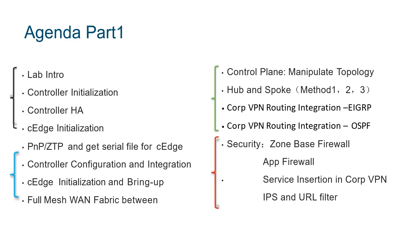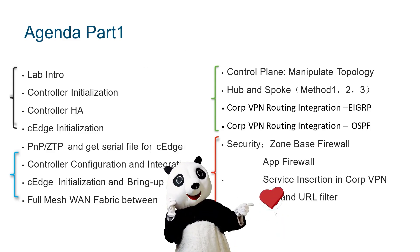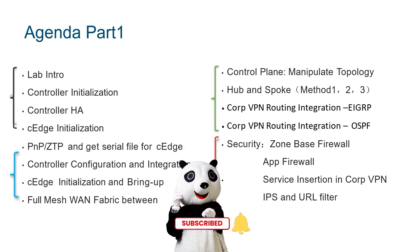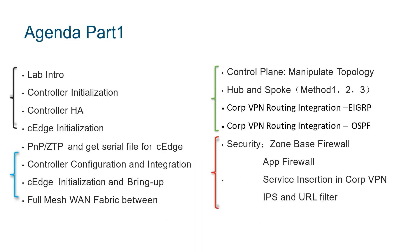The first part is also divided into four smaller segments. The first segment is an introduction to our entire experimental scenario throughout the learning process. We have two main learning materials: the PPT and a step-by-step experimental manual which introduces our experimental scenario in great detail. Our experimental scenario involves dual DC deployment and application in a headquarters and branch office setup.